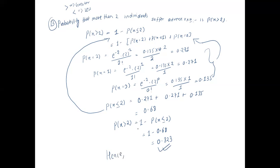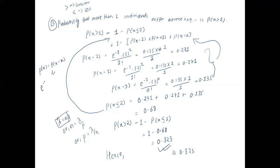Hence, the probability that more than two individuals suffer adverse reaction is 0.323. To summarize the key formulas: lambda equals n times p, and the Poisson distribution probability mass function is P(X = x) = e to the power minus lambda multiplied by lambda to the power x, divided by x factorial. These are the most important formulas for solving Poisson distribution questions. Thank you so much, have a good day, bye bye.